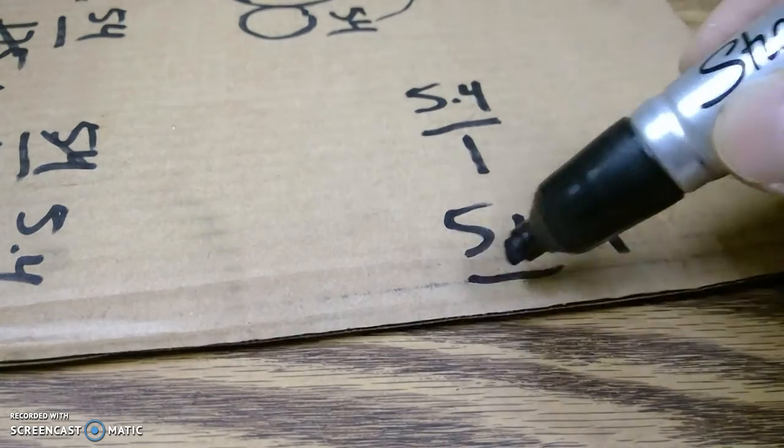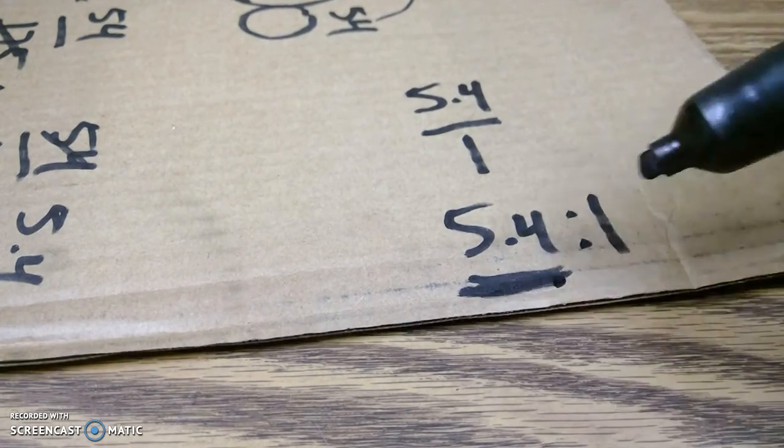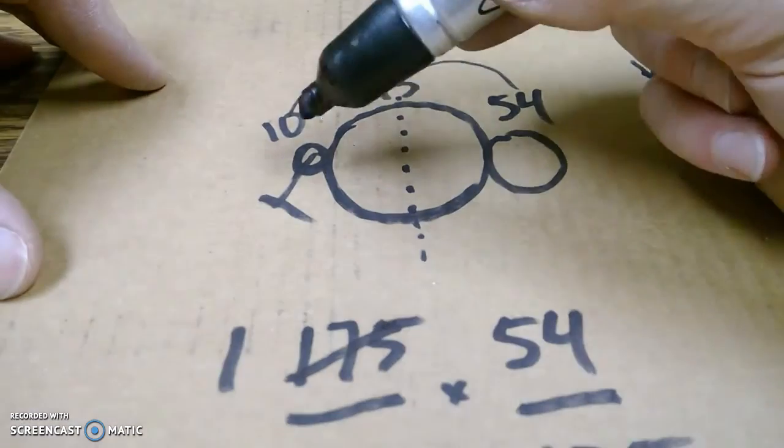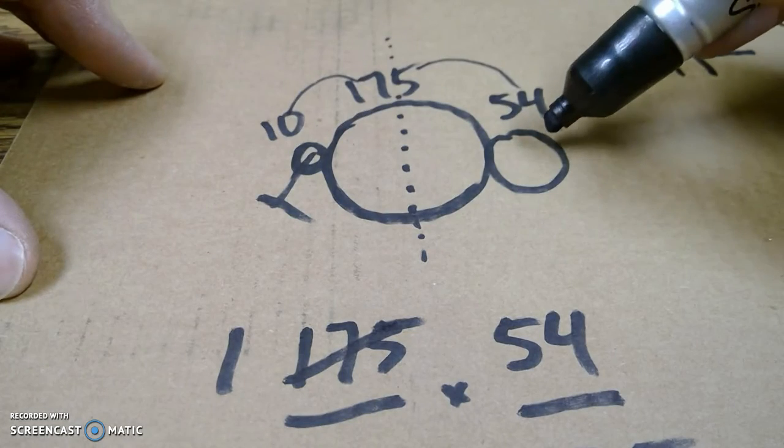Which means every 5.4 turns of the driver, I'll get one turn of the driven. So if I do 5.4 spins here, I'll get one here.